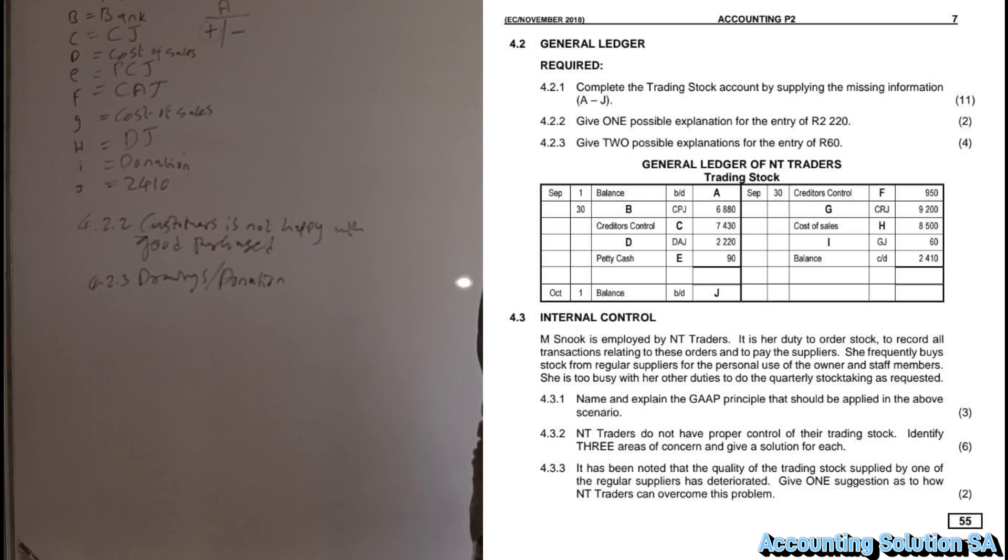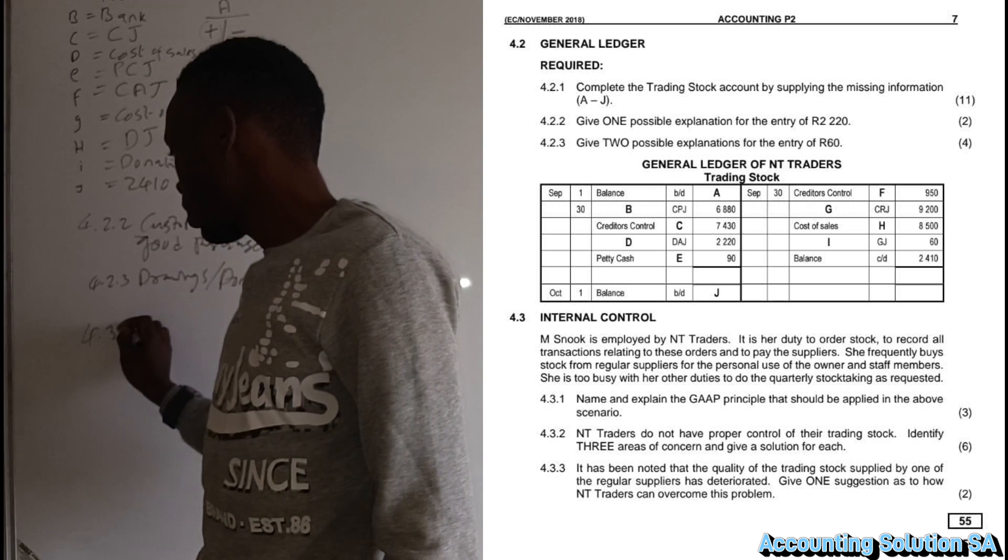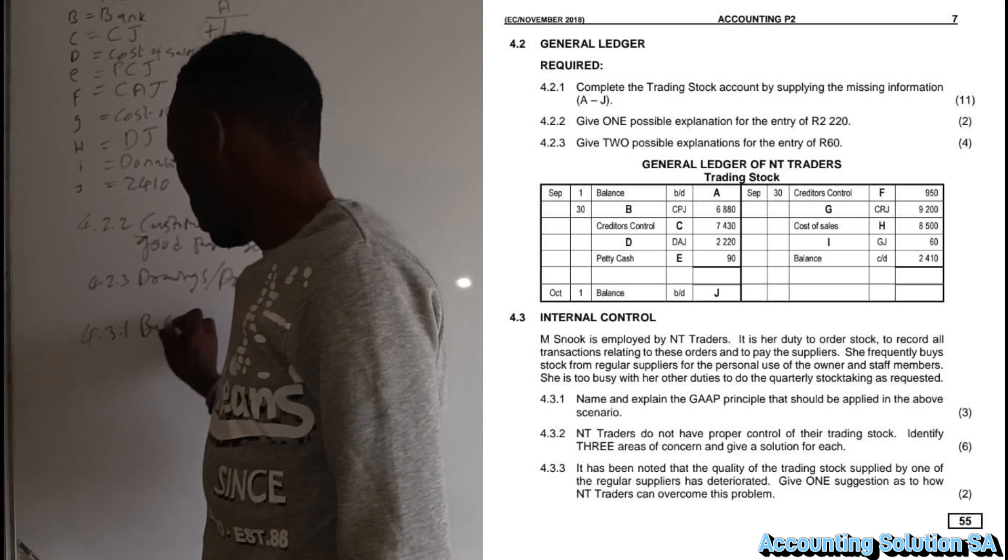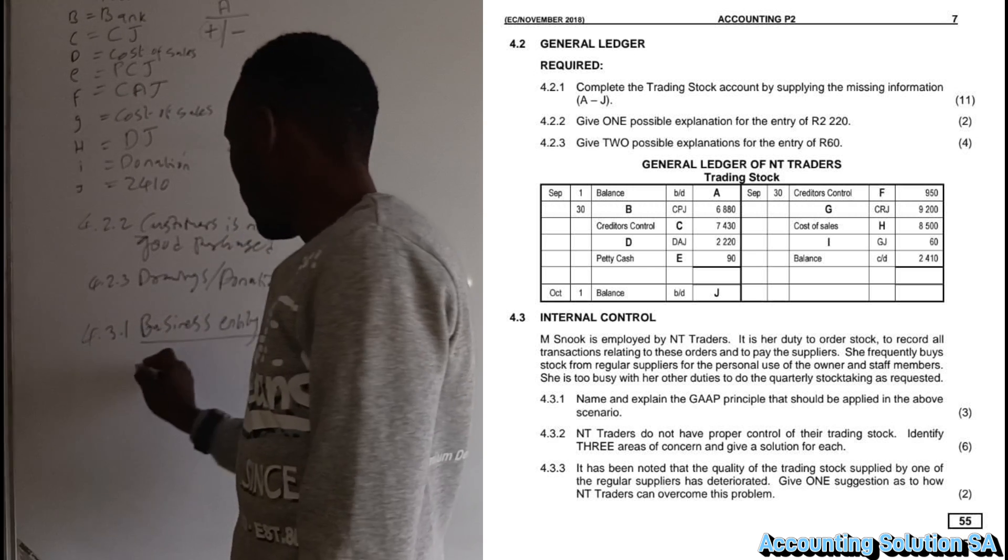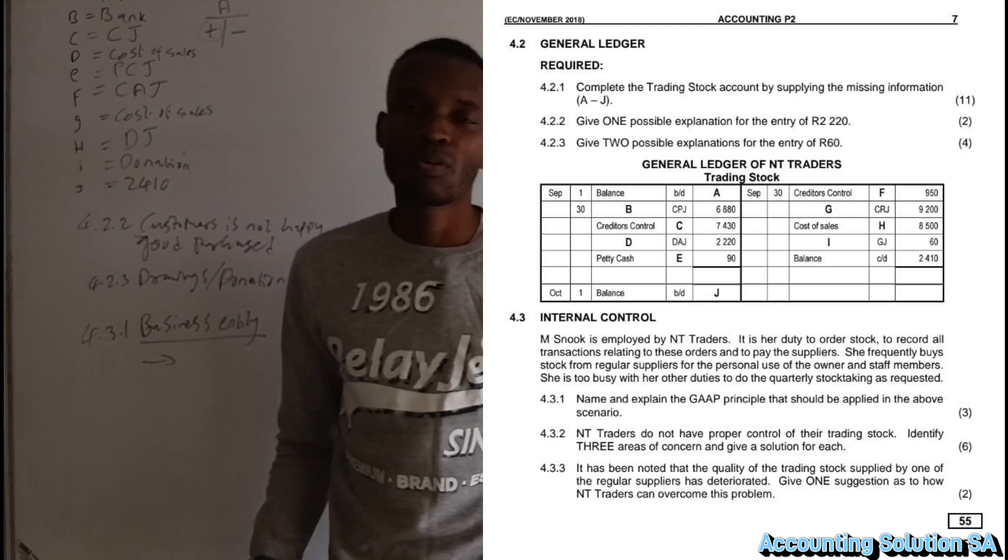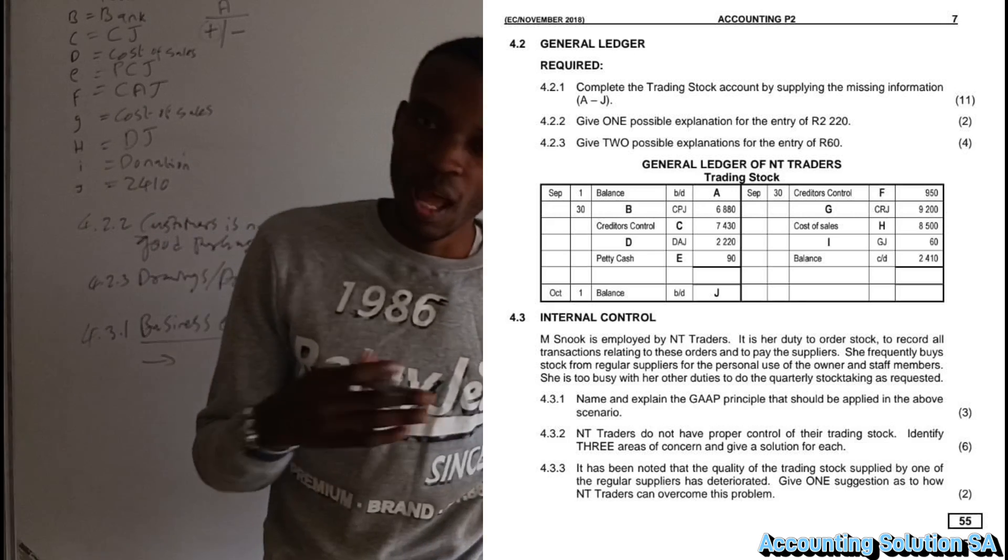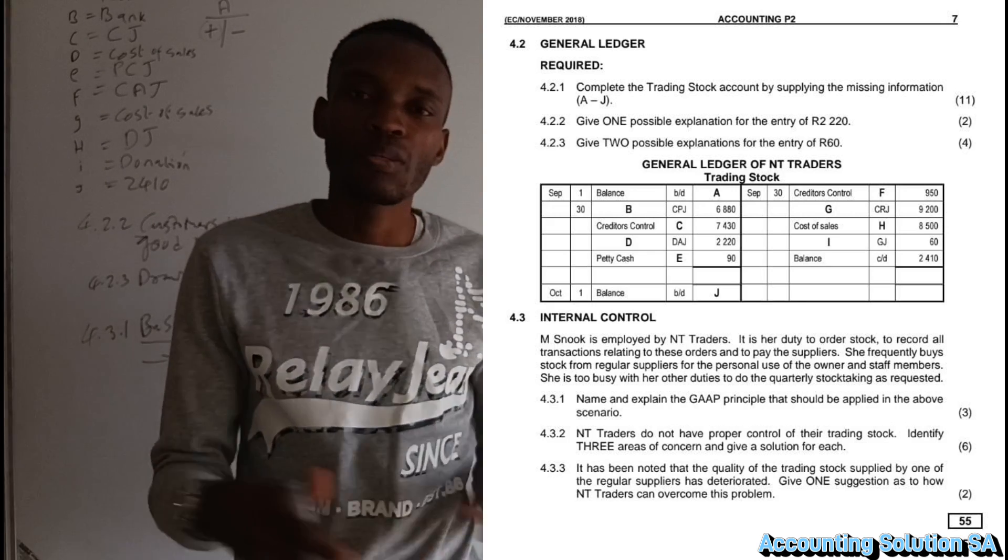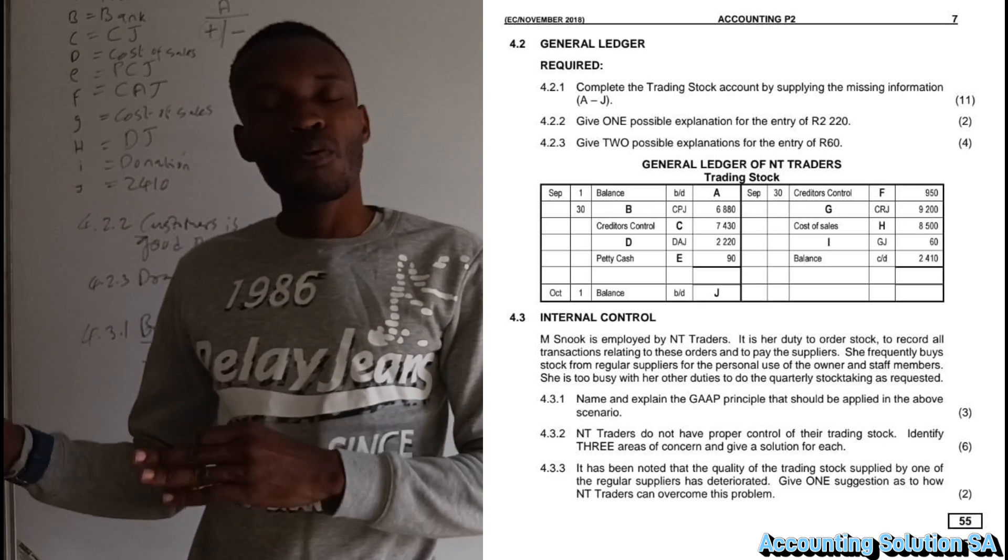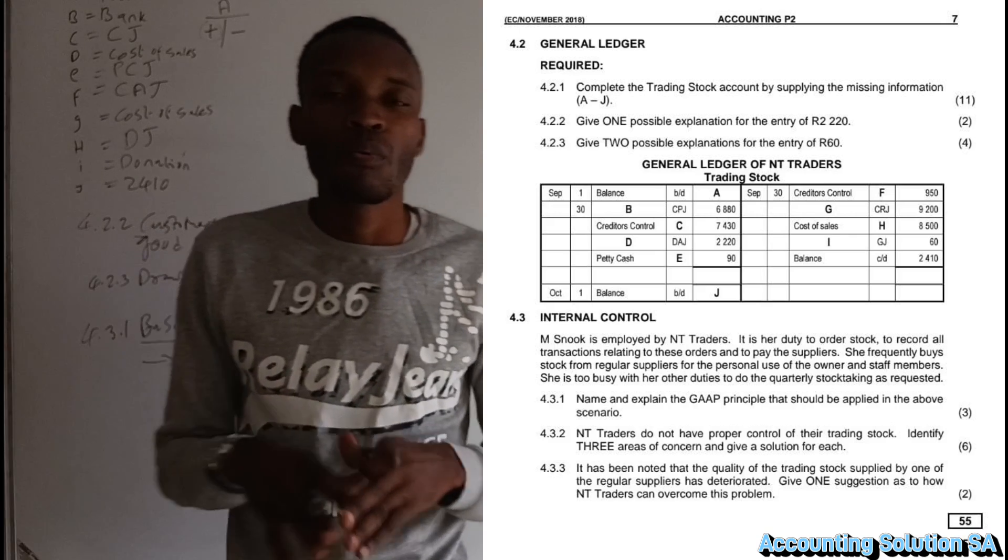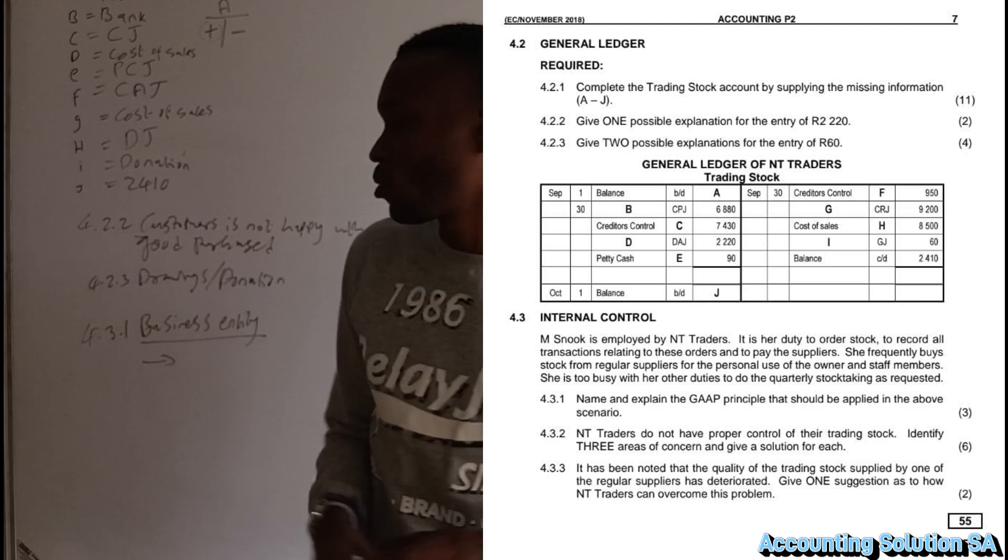Now name and explain the GAAP principle that we need to apply. In this case, we are going to apply the GAAP principle 4.3.1: business entity. Why are we applying this GAAP principle? Because this principle says that the owner must make sure that he doesn't mix up the transactions of personal use together with what, with the business. We have to separate those two. For the owner, for personal use or for private use, we have to do them separate. And for business, we do them separate.